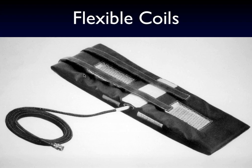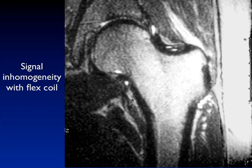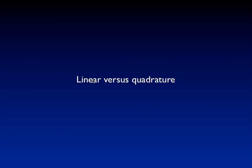Flex coils can also be used. In practice, flex coils are never quite as good as rigid coils for signal intensity, but they are useful at various sites, especially for unusual body parts. Here is a flex coil wrapped around the hip, giving a little more uniform signal intensity, though it still tends to be bright next to the coil with significant drop-off further away.